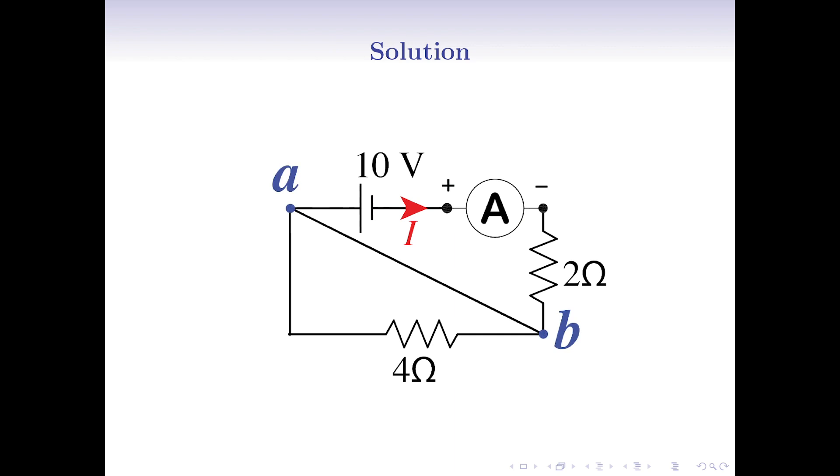Notice that the two nodes A and B are connected just by a wire. This means a short circuit. So, points A and B are the same node without any voltage difference, which means the 4 ohm resistance is short circuited.